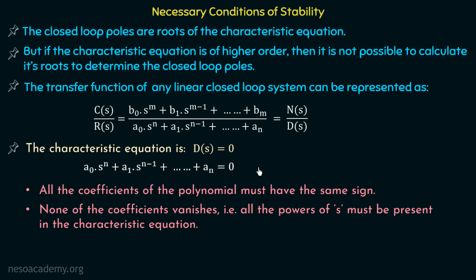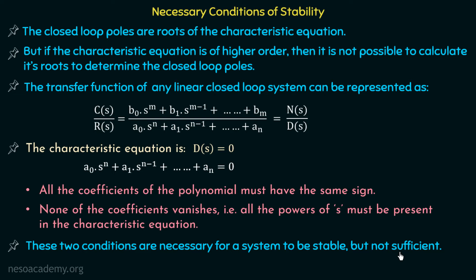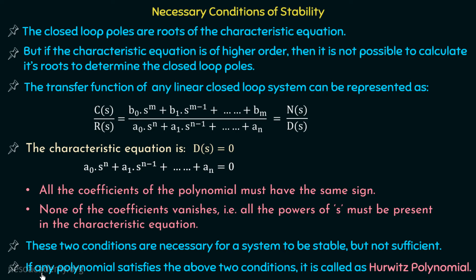These two conditions are necessary for a system to be stable, but they are not sufficient conditions. If any of these two conditions is not satisfied, we can directly say that the system is unstable. But if both conditions are satisfied, we need to further check for stability by applying the Routh test, which we will discuss in the later section of this lecture.